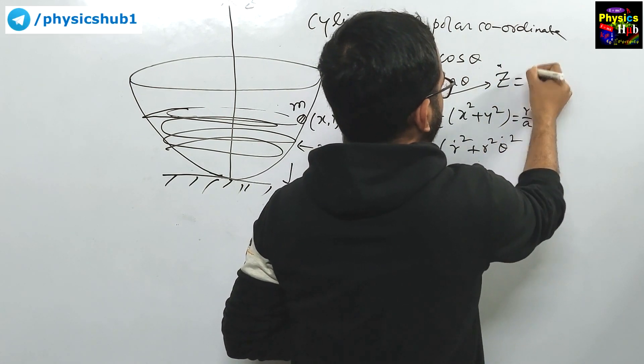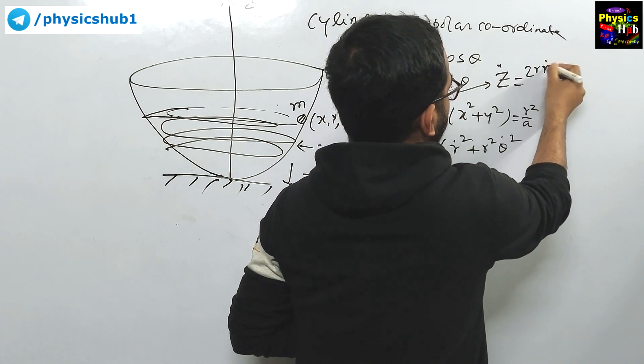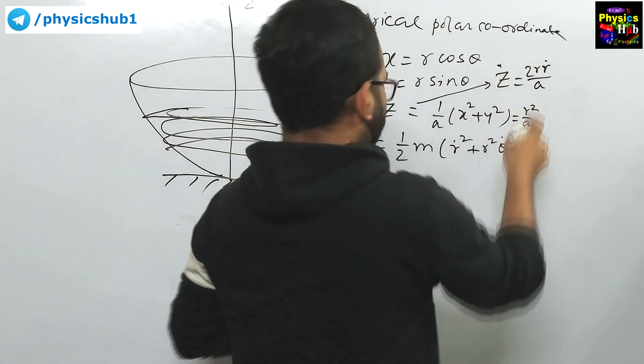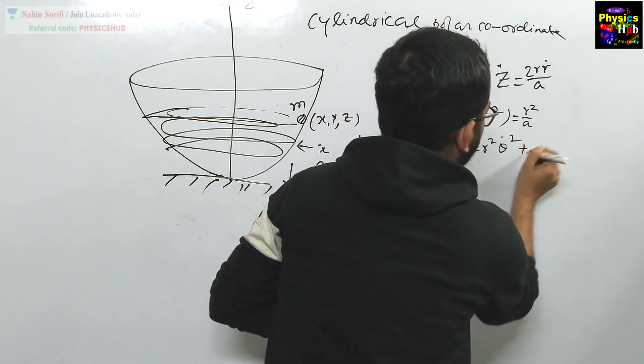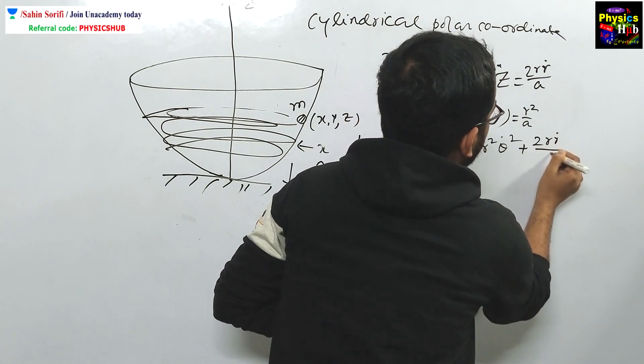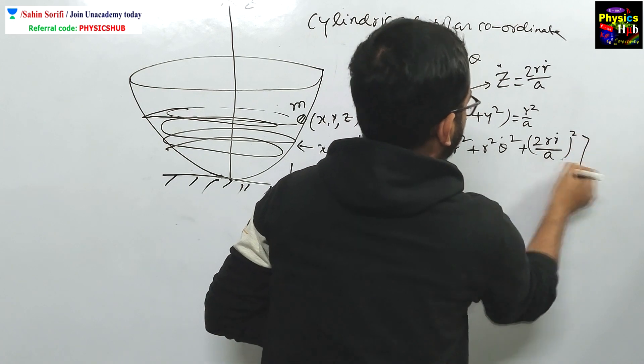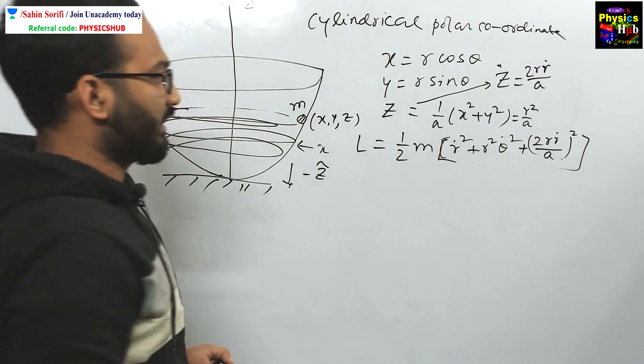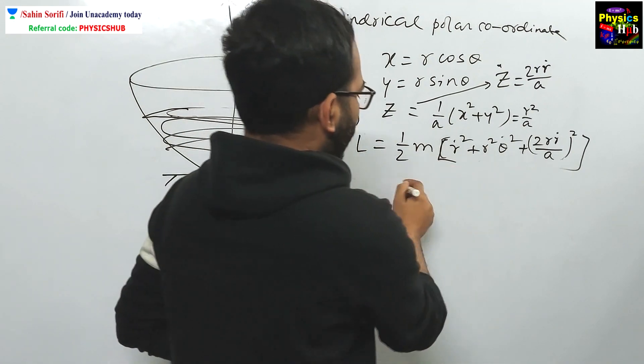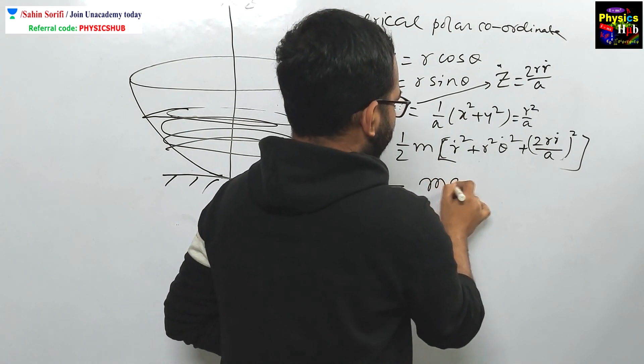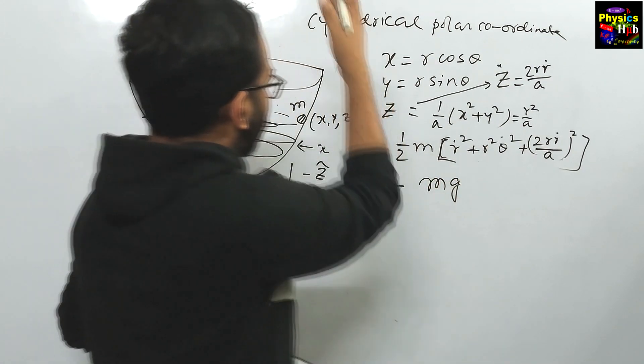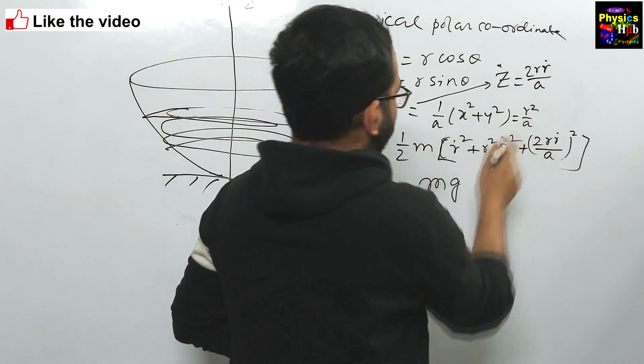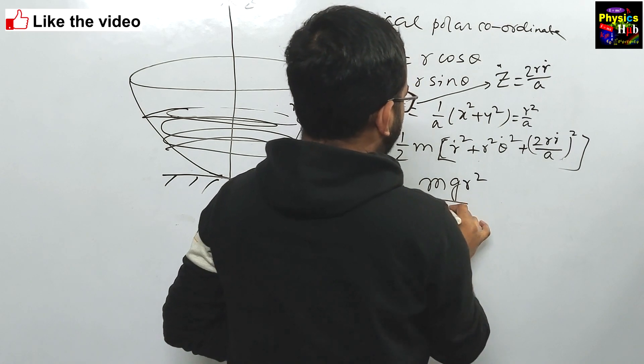From here we can evaluate the value of z dot. What is z dot? This equals to 2r r dot upon a. So in the place of z dot square, we can put this value 2r r dot upon a. This is the kinetic energy minus potential energy mgh. H is the z direction, z vertical. Z is equals to mgr square upon a.